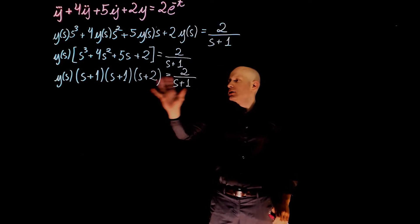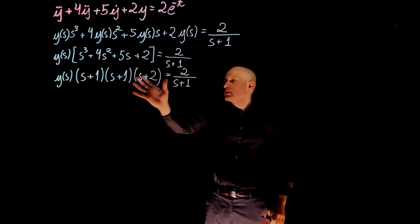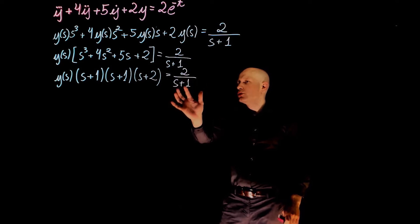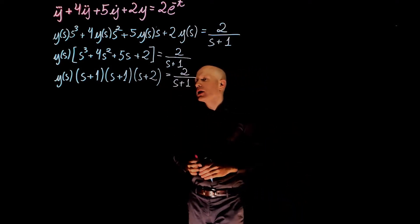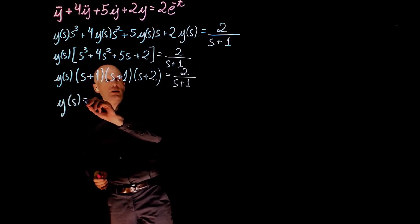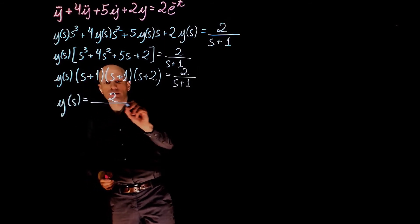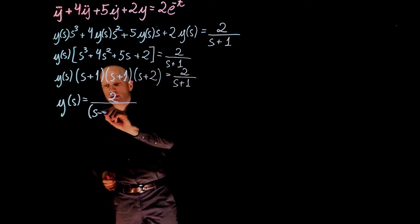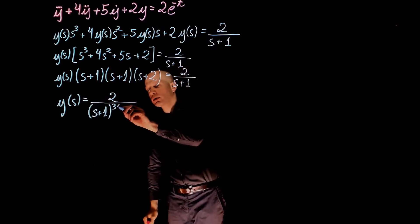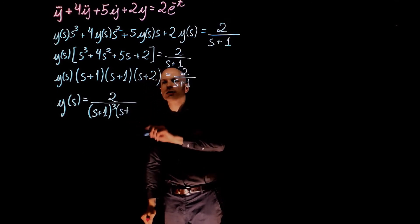If we now divide, move s plus 1 squared times s plus 2 to this side of the equation, we are going to have 2 over s plus 1 squared divided by s plus 2. We have y(s) is 2 over s plus 1 to the power of 3 times s plus 2.